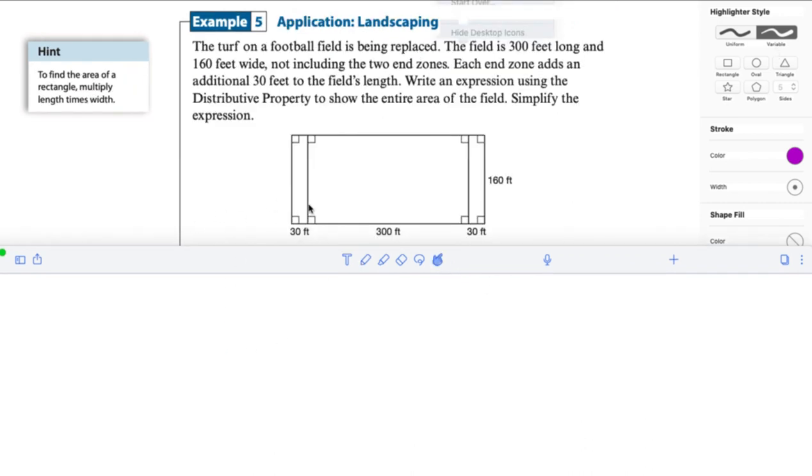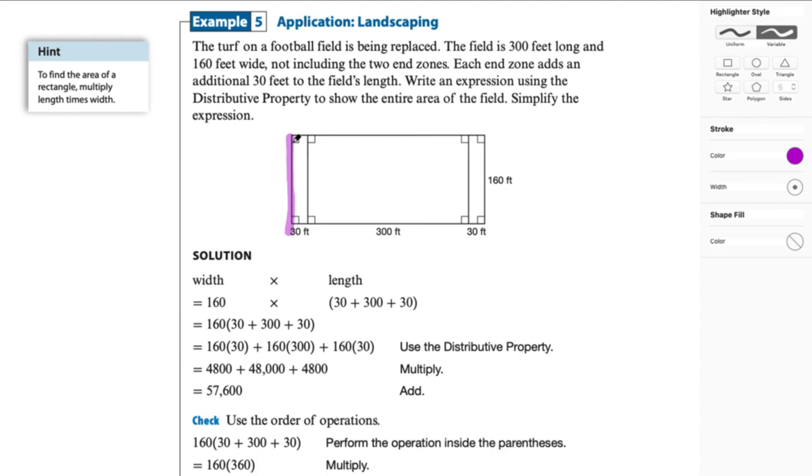And here's our final example. Example 5. We are going to consider this landscaping situation. So the turf on a football field is being replaced. So this is our field. The field is 300 feet long and 160 feet wide, not including the two end zones. Each end zone adds an additional 30 feet to the field's length. Write an expression using the distributive property to show the entire area of the field. Simplify the expression. So we know that when we find the area, it's going to be length times width, right? So we're going to have length times width over here.